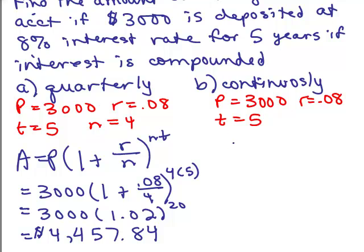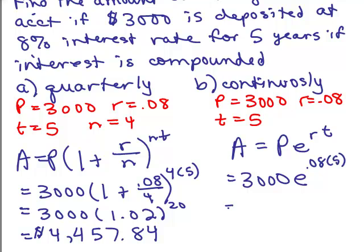Now, let's do it continuously. The formula is A equals PE to the RT, so again, P is still 3,000, but we have E to the RT, so we have .08 times 5, so that's 3,000 times E to the .4, because .08 times 5 is .4.